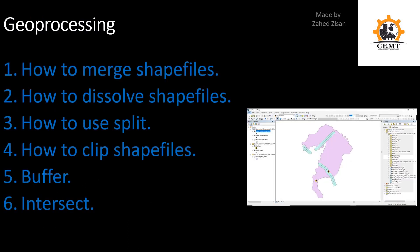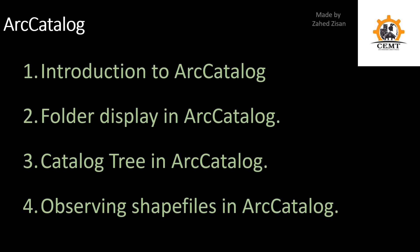The next section is on Geoprocessing. Here we'll learn how to merge shapefiles, dissolve shapefiles, split polygons of a single shapefile into different shapefiles, clip shapefiles, and use the buffer tool and the intersect tool. For those two tools I've prepared two different questions to help you understand them better.